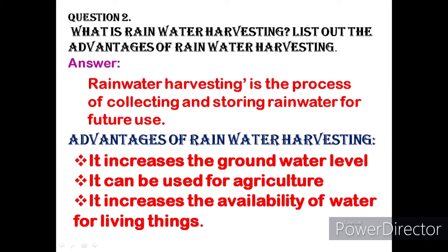Advantages of rainwater harvesting: it increases the groundwater level, it can be used for agriculture, and it increases the availability of water for living things.